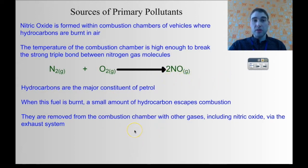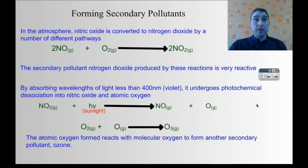Hydrocarbons are also a primary pollutant. They're the major constituent of petrol. When you burn the petrol not all of it gets burnt, so some of the hydrocarbon comes out of the tailpipe. They go out via the exhaust system with the nitric oxide and the other waste gases.